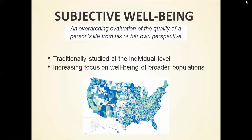In our research, we've done this at the individual level, and people are increasingly applying this to look at the well-being of broader populations. What you have up here is a map of the life satisfaction of different counties throughout the United States. The white areas are where we don't have enough data. From the lighter green to the darker green, that's where the happier counties are. We can use this information to get some sense about what sorts of policies are actually leading to happier places and what we can do to make our cities and counties better.